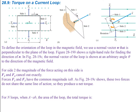To define the orientation of the loop in the magnetic field, we use a normal vector n that is perpendicular to the plane of the loop. The right-hand rule gives the direction of n: curl your hand around the direction of the current, and your thumb shows the direction of the normal vector. The figure shows the loop with four labeled sides in a magnetic field going into the page, indicated by x's, causing forces in various directions that produce a net torque.